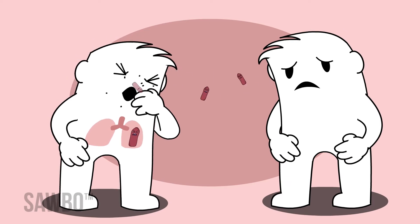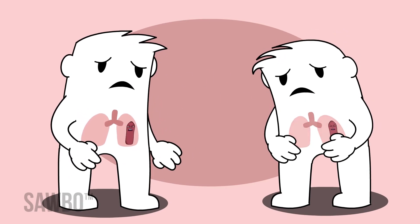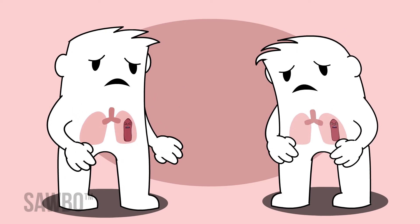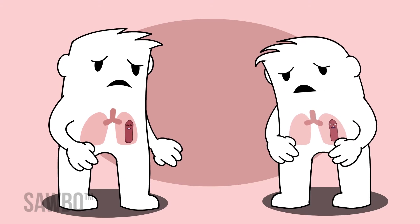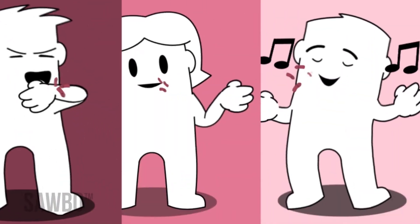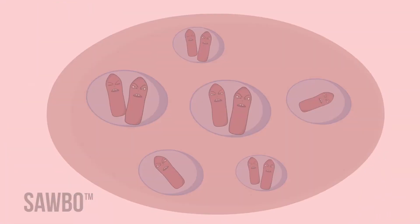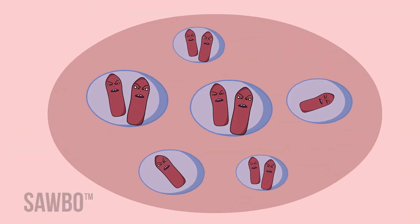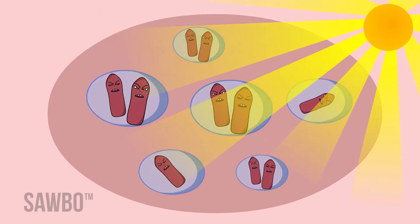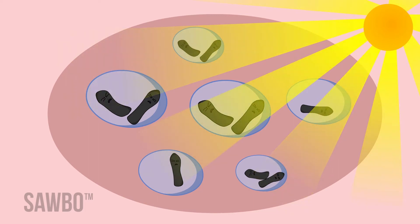Effective TB management begins with preventing its spread. Spending time near people with active TB can lead to you catching TB. If a person with TB coughs, speaks, or sings, the bacterium can live for up to four hours in the air, but dies quickly in sunlight. Most infections for this reason occur indoors.